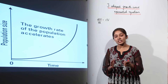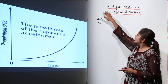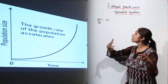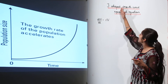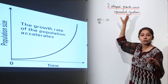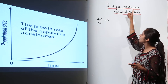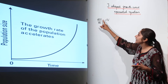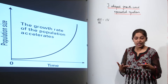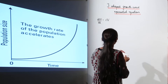After studying the J-shaped growth curve, we need to know how to represent it in the form of an exponential equation. The exponential equation for this J-shaped growth curve is dn upon dt is equal to rN. Let us see what these terms actually imply.